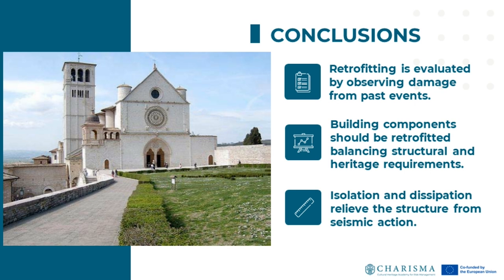In conclusion, the efficacy of a retrofit is usually evaluated by observing damage from past events. Building components should be retrofitted keeping in mind an appropriate balance between structural and heritage requirements. Efficient isolation and dissipation is that which relieves the structure from seismic action. However, with regard to cultural heritage objects, this is a demanding task.